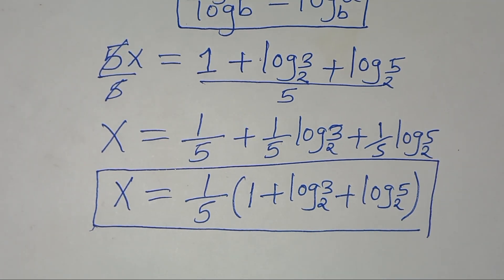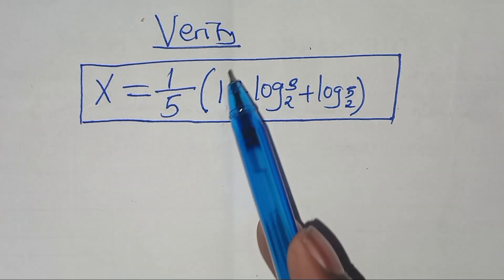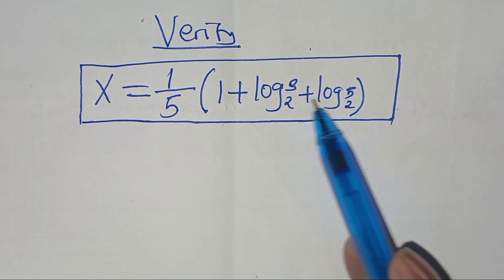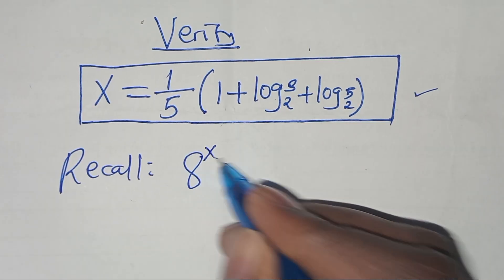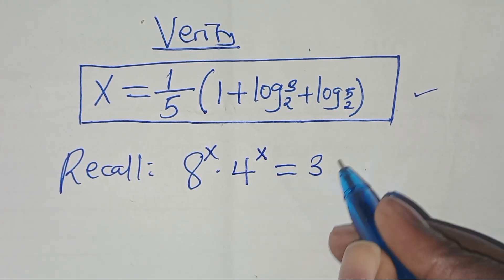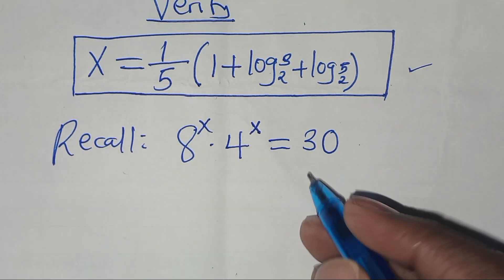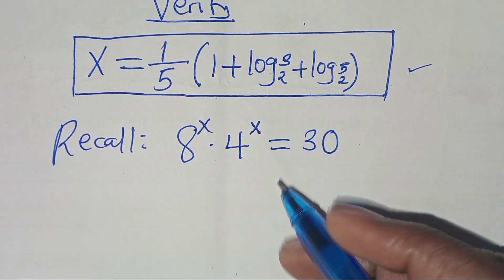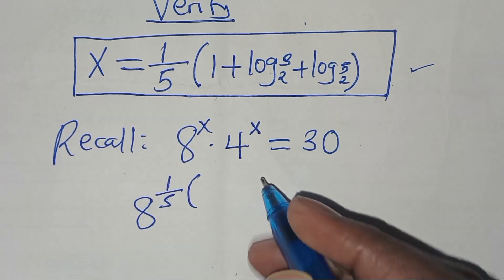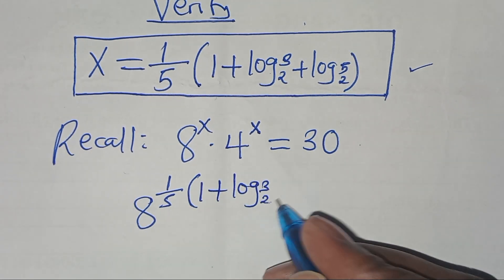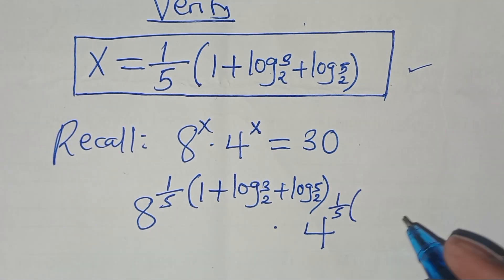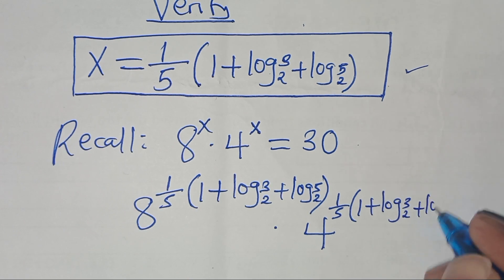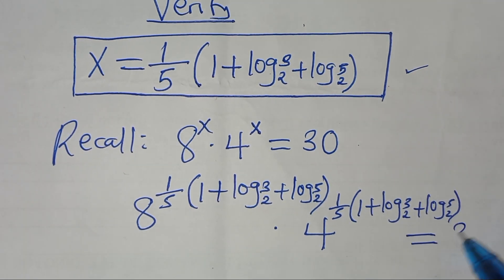Let's verify that this value of x actually satisfies the equation. We need to confirm that x equals (1 over 5)(1 plus log₂3 plus log₂5) satisfies 8 to the power x times 4 to the power x equals 30. Substituting, we have 8 to the power [(1/5)(1 plus log₂3 plus log₂5)] multiplied by 4 to the power [(1/5)(1 plus log₂3 plus log₂5)].